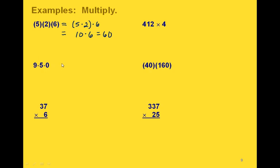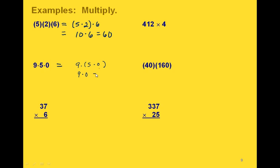Let's do this one a different way — let's start by grouping the 5 and the 0 together. We can use the multiplication property of 0: 5 times 0 gives us 0, so then we have 9 times 0, which is going to be 0.